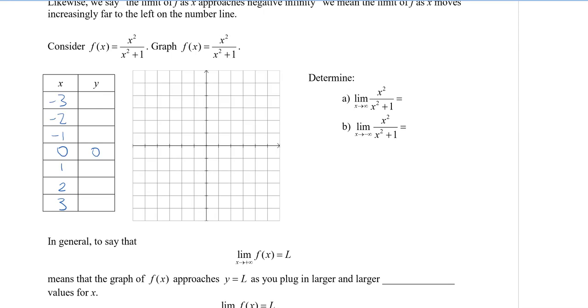When I plug these numbers in, I get 9 tenths for negative 3, 4 fifths for negative 2, a half for negative 1. Plug in 1, I also get a half. For 2, I get 4 fifths, and for 3, I get 9 tenths. We can see that this is very symmetrical.